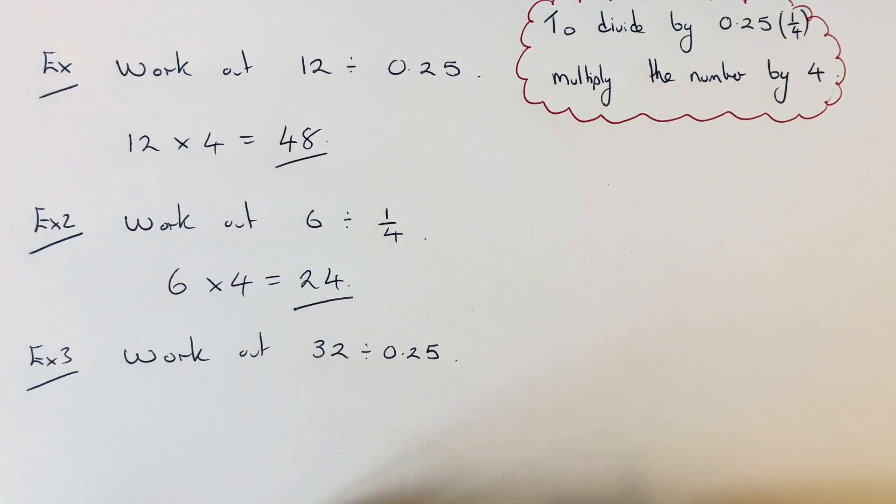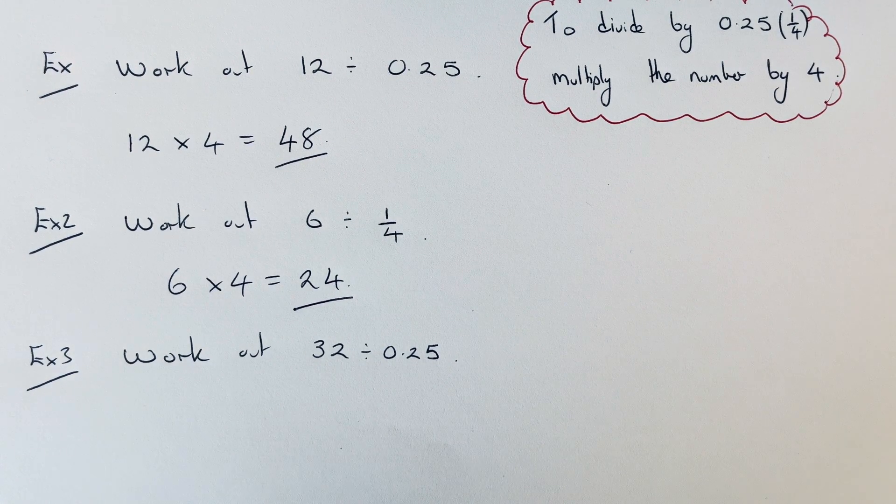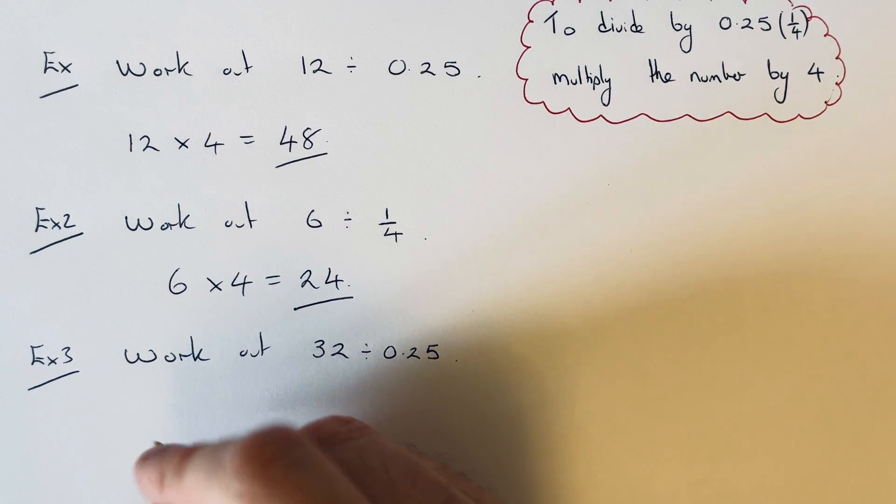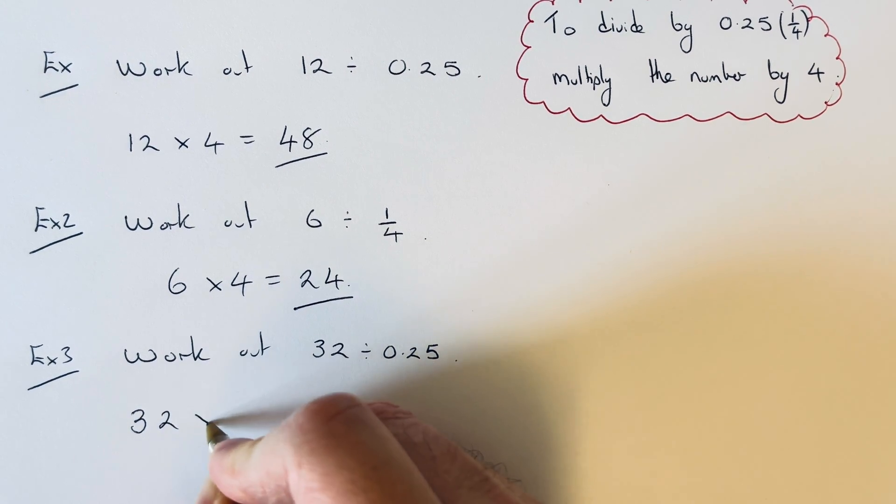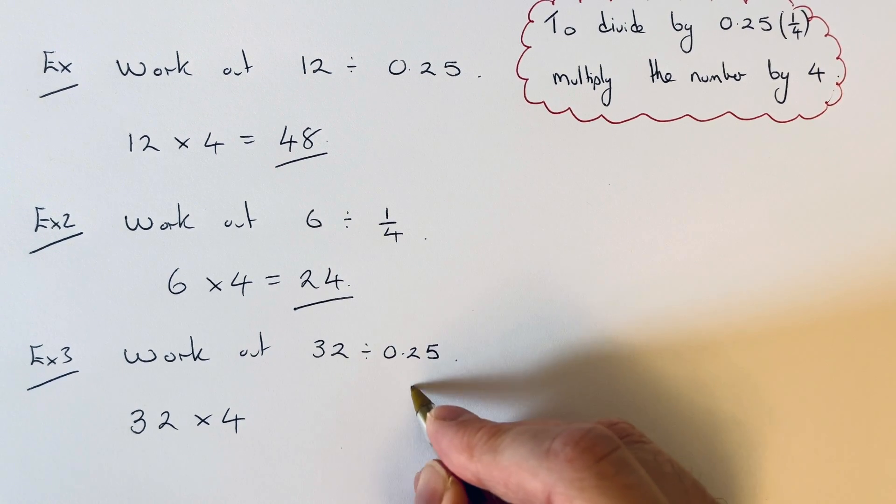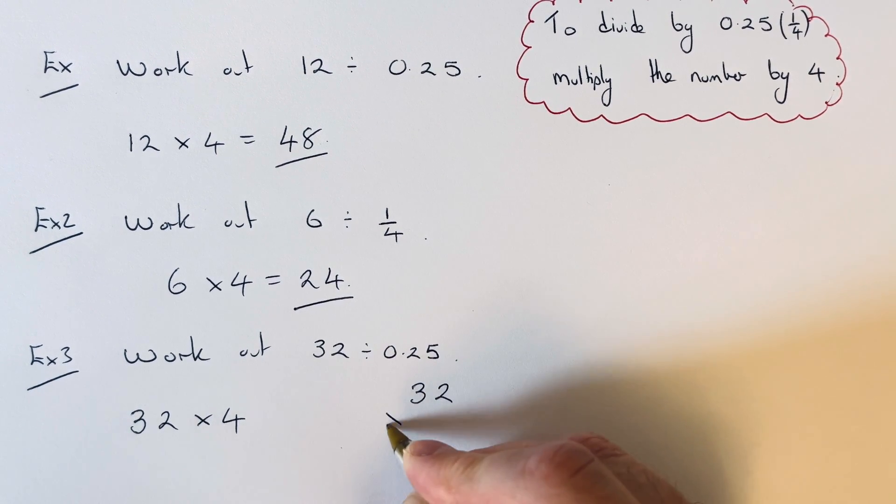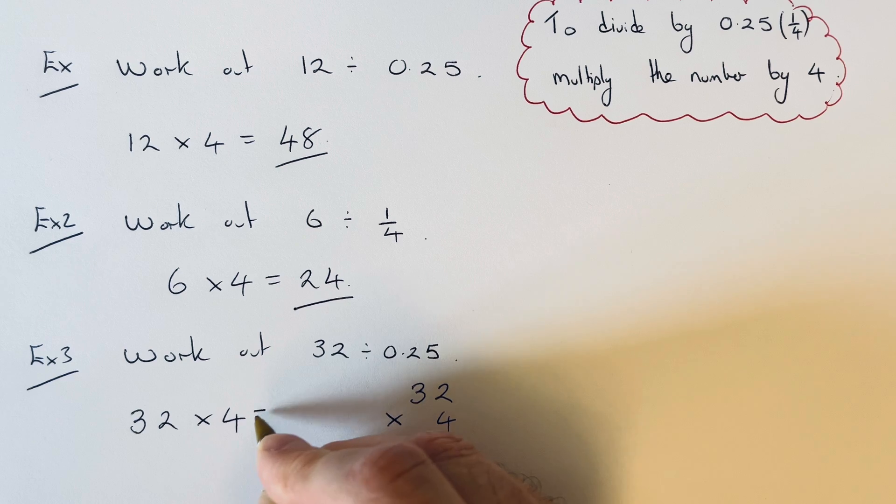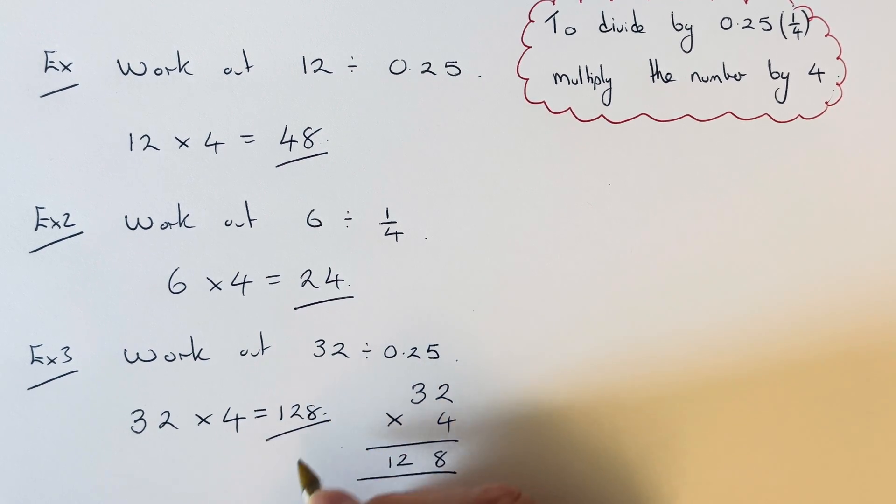And the final example, work out 32 divided by 0.25. So again, we just need to multiply the number by 4. If you can't do this in your head, work it out in columns. 2 times 4 is 8, 3 times 4 is 12. So the final answer is 128.